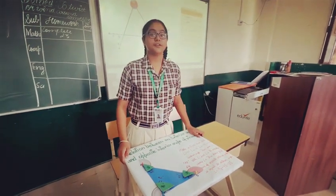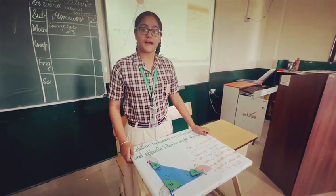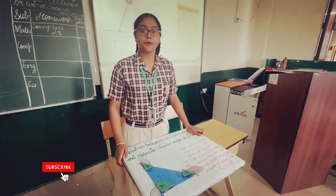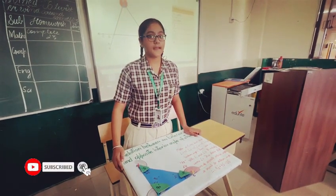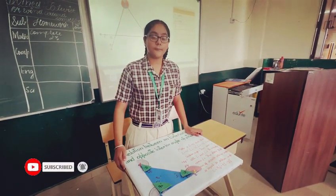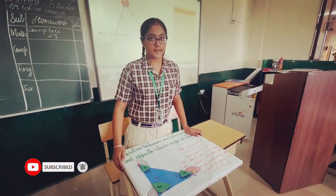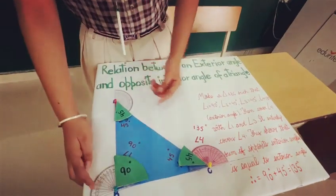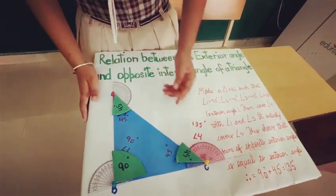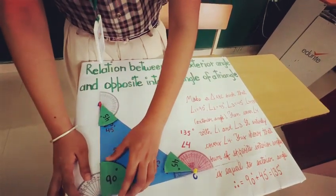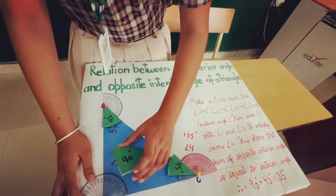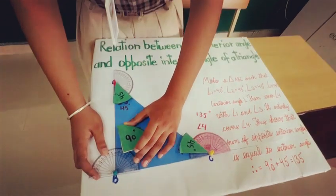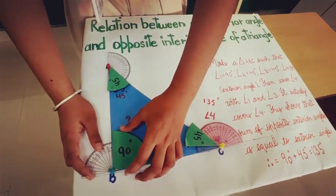Good morning everyone. Today I have a number of wheels here to prove the relation between the exterior angle and the opposite interior angle. Here I have a triangle ABC in which angle 1 is 90 degrees. With the help of a protractor we can measure its exact 90 degrees.